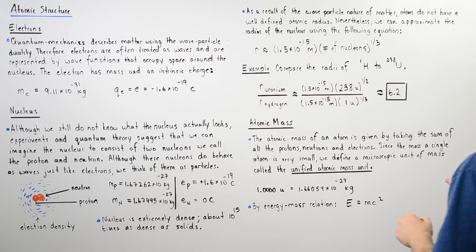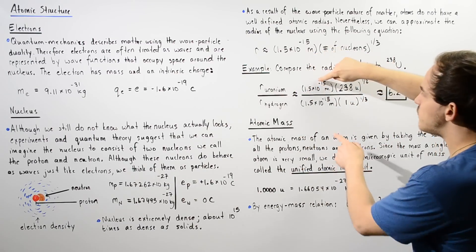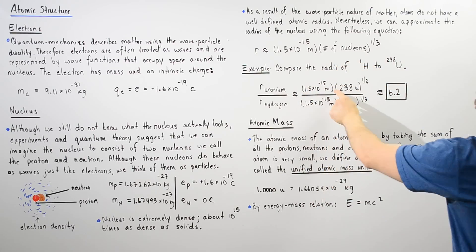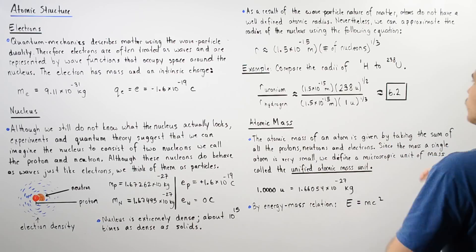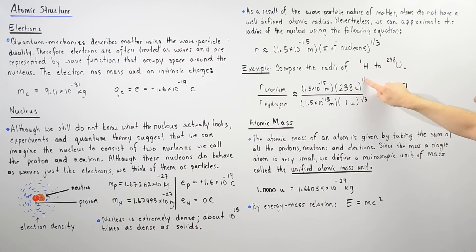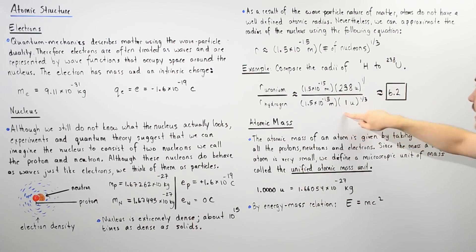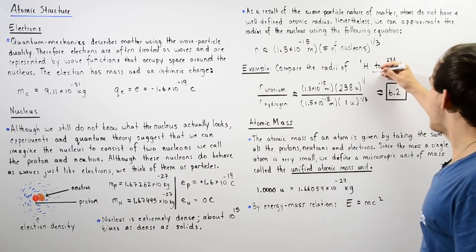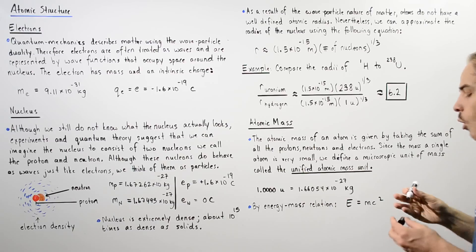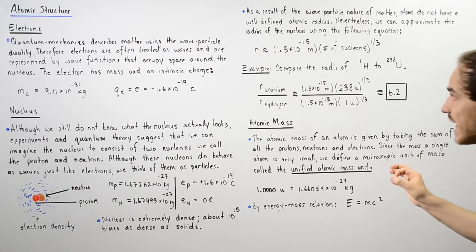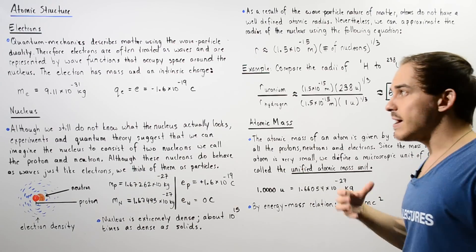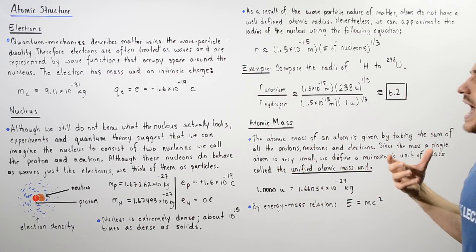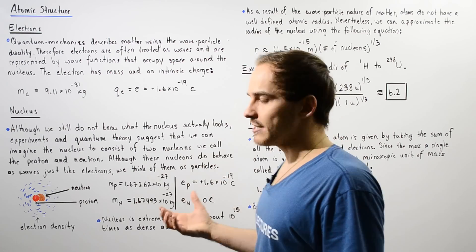Let's plug in our numbers. These two constant values are the same, so we can cancel them out. We then have 238 to the power of one-third divided by 1 to the power of one-third, and this gives us a value of about 6.2. So the radius of the uranium atom is about 6.2 times as large as the radius of the hydrogen atom.